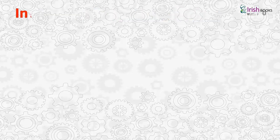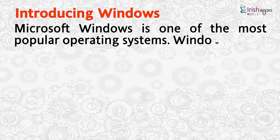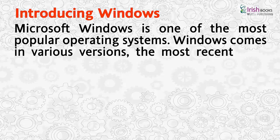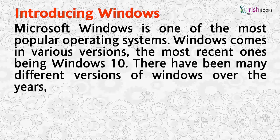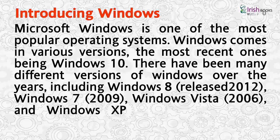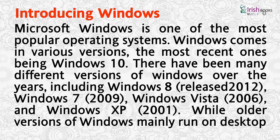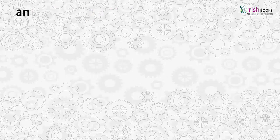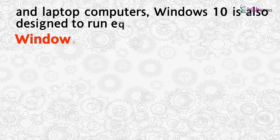Microsoft Windows is one of the most popular operating systems. Windows comes in various versions, the most recent being Windows 10. There have been many different versions over the years, including Windows 8 (released 2012), Windows 7 (2009), Windows Vista (2006), and Windows XP (2001). While older versions mainly run on desktop and laptop computers, Windows 10 is also designed to run equally well on tablets.